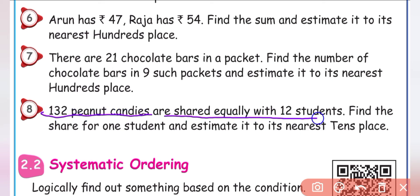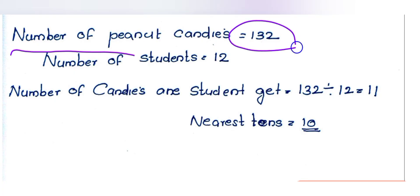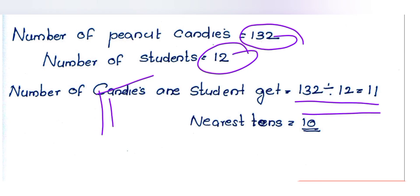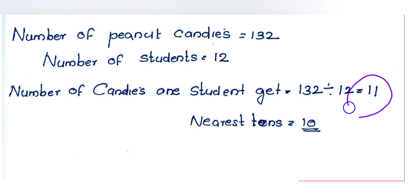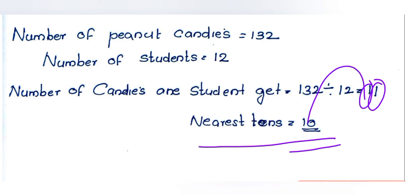Next: 132 peanut candies are shared equally among 12 students. Find the share of 1 student and estimate to the nearest tens place. Actual: 132 ÷ 12 = 11. Each student gets 11 peanut candies. Estimated: 11 — ones place is 1, less than 5, so round down to 10. So the nearest tens place is 10. That's all for this class, thank you.